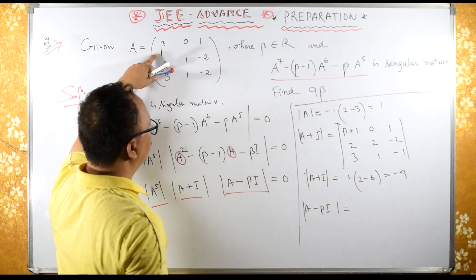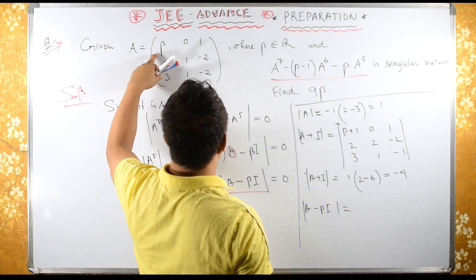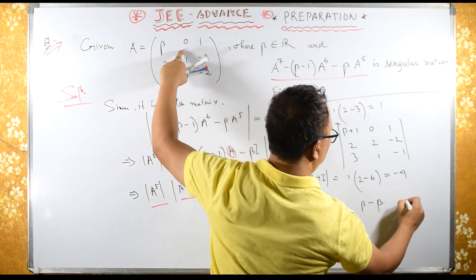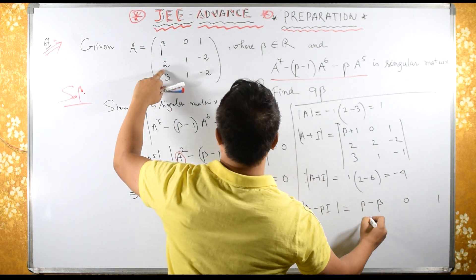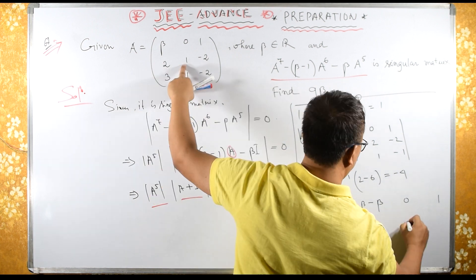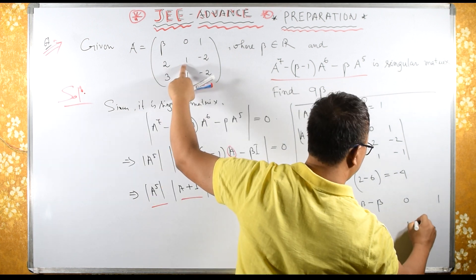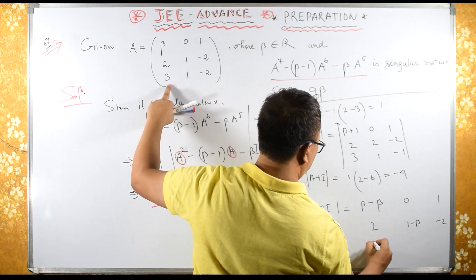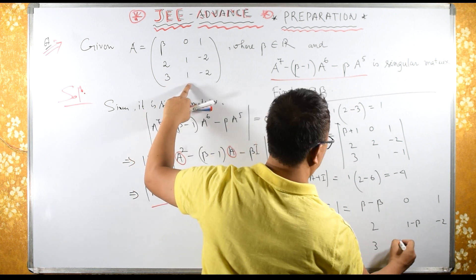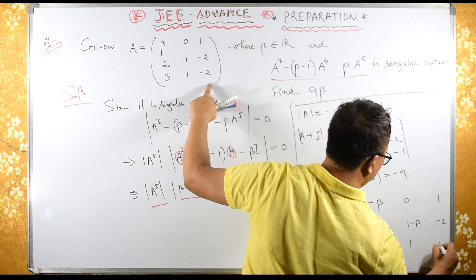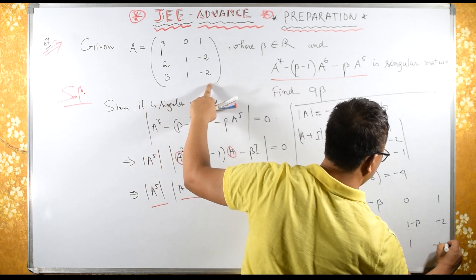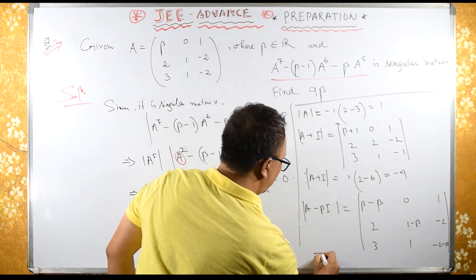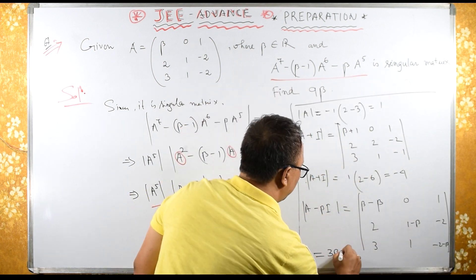Now for A minus beta times I: we subtract beta from each diagonal element of A, giving entries 0, 1, 2 in the first row; then 1 minus beta, minus 2; then 3, 1, minus 2, minus beta. Computing this determinant gives 3 beta minus 1.